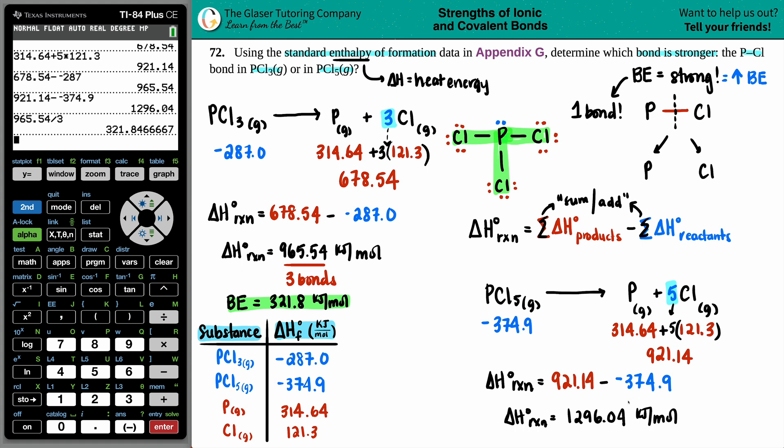Now the same thing for this guy. If we draw out what PCl5 is - how many bonds are there? Did you guess four? JK. There's five. One, two, three, four, five.